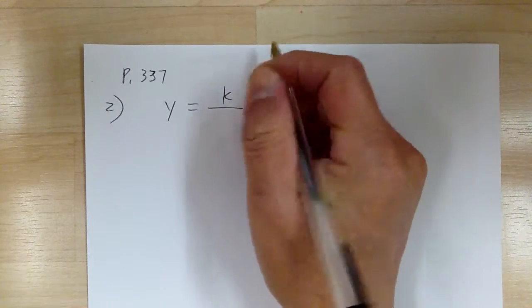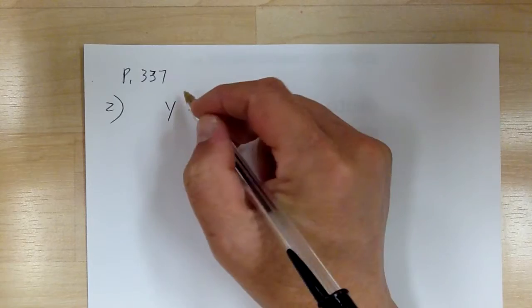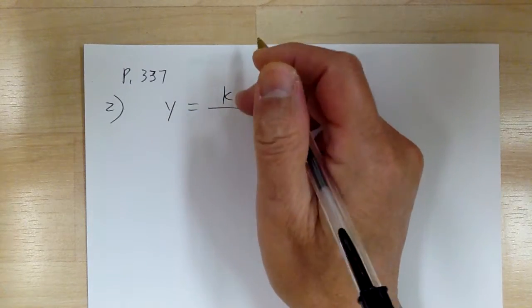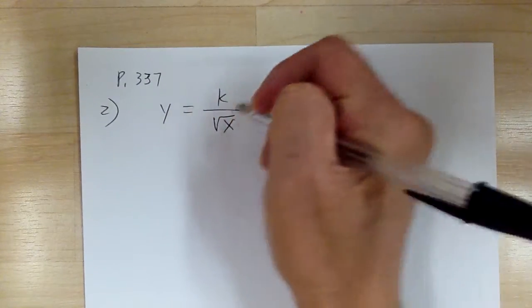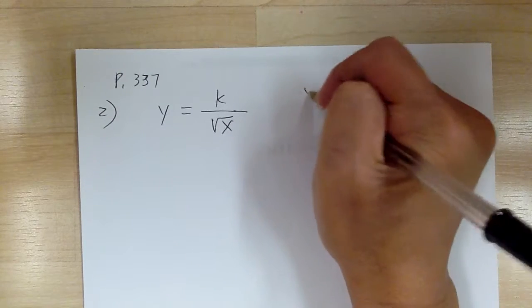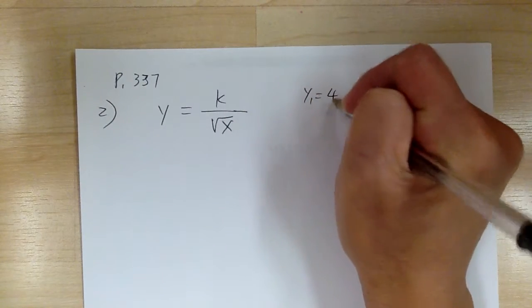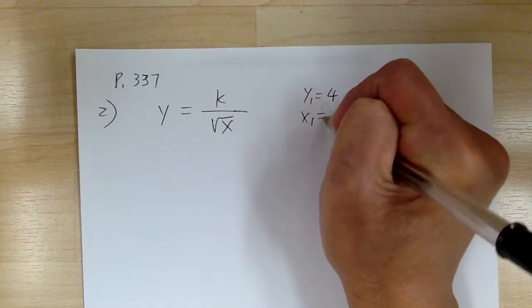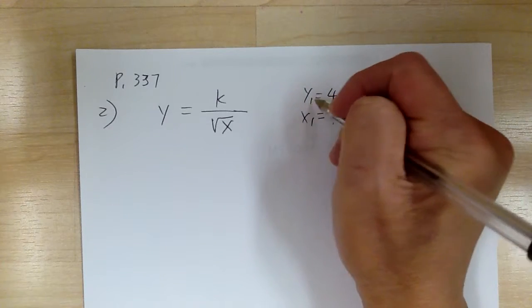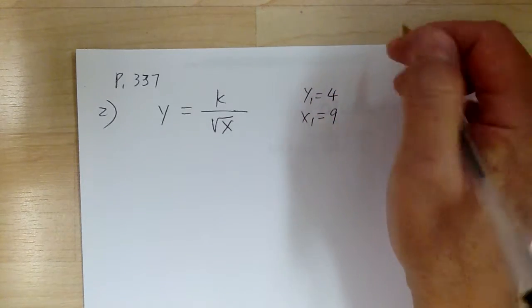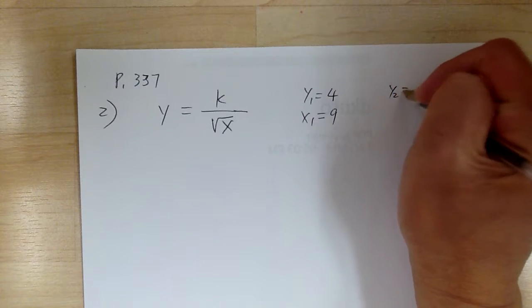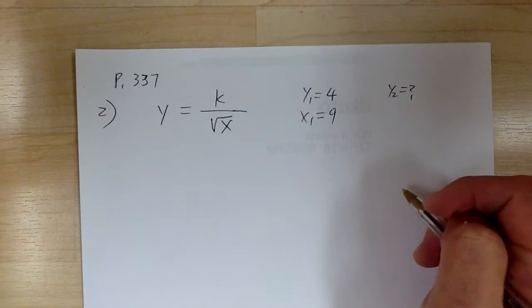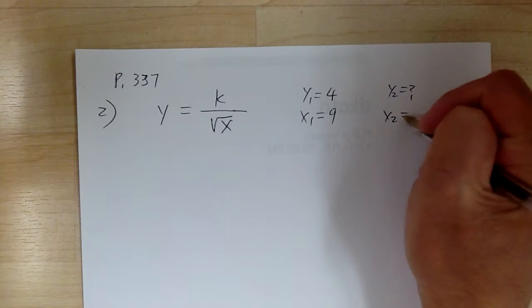So if y varies inversely as the square root of x, and it says y, so this is y₁ equal to 4 and x₁ equal to 9. And this 1, because this is the first time you see it, right? It says find y, so you're looking for y₂ when x₂ equal to 4.